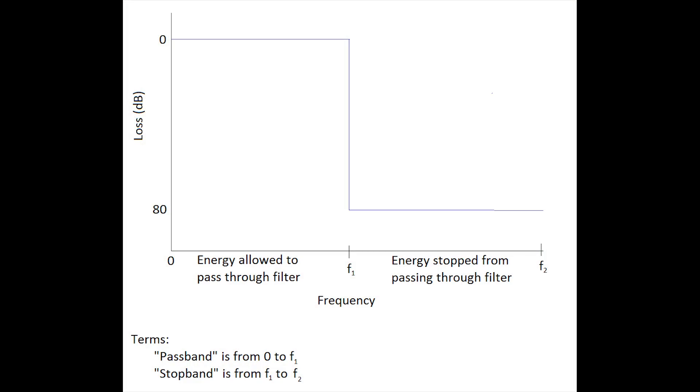In this drawing I'm showing a low-pass filter response. On the y-axis is loss and on the x-axis is frequency. You can see loss at zero means no loss, so all the energy goes through at that point. A loss of 80 dB means all the energy is blocked because you have a huge amount of loss. On the frequency axis, the energy from frequency zero to f1 is allowed through by the filter, and that's the passband—passing energy through a band of frequencies with very low loss.